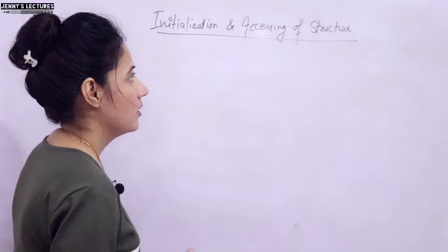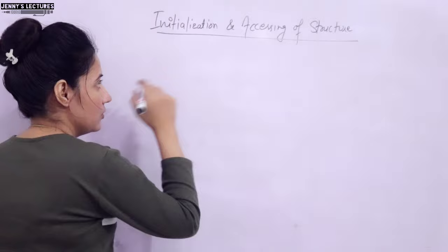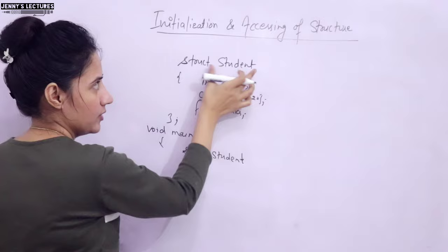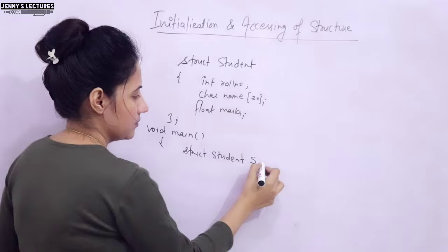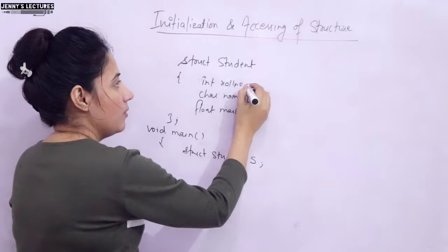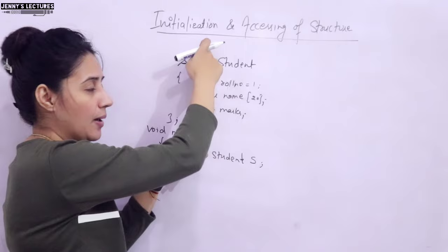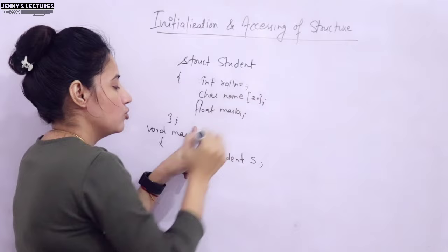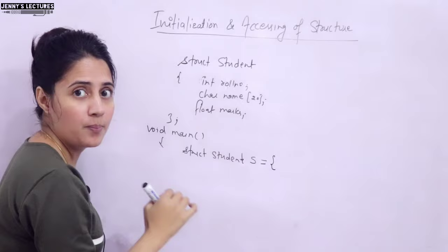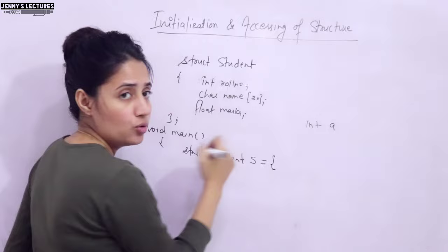Let's take the example from the previous video. Since a structure is a user-defined data type, to declare a variable you write 'struct student' followed by the variable name — say 's'. Now, can you initialize members directly inside the structure definition, like 'rollNumber = 1'? No, that would be wrong because no memory has been allocated there — it is just a template. So you cannot store any value at that point.